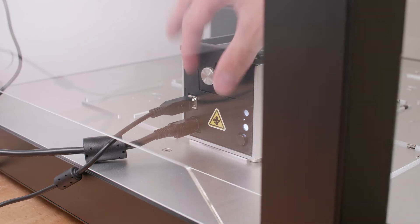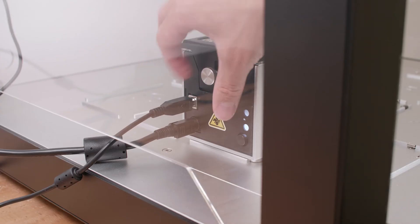Adding labware to your magnetic module is as simple as unscrewing a latch, placing your labware, and locking it down.